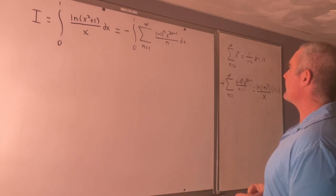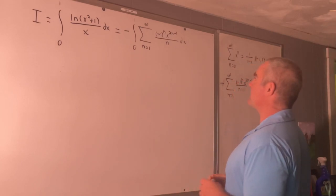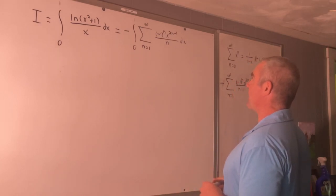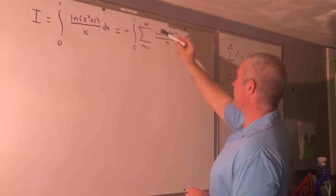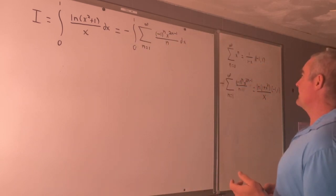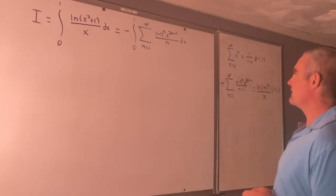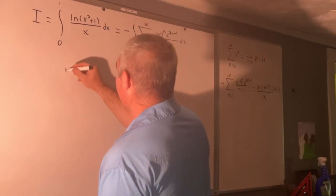Now let's see. Can we switch? Hopefully we can switch these two. And I don't see that there would be any problem doing that. Can we integrate from 0 to 1 x to the 2n minus 1? Yeah we can. There's no problems with that. So yeah we can switch the bounds of integration and summation.